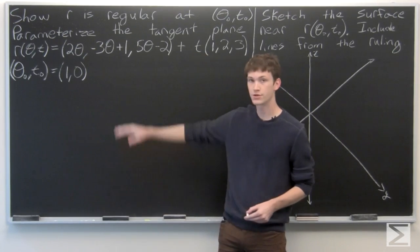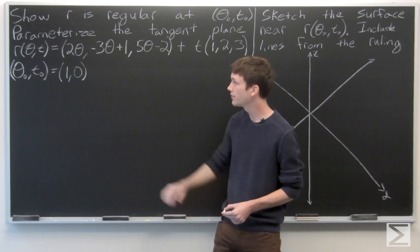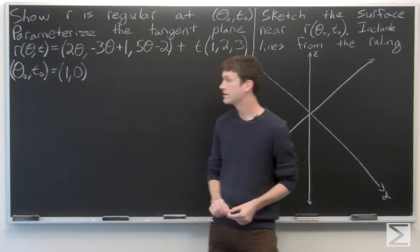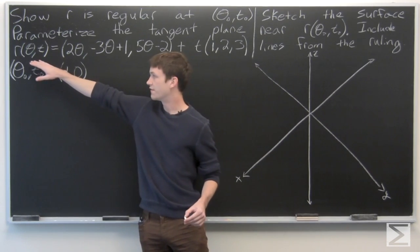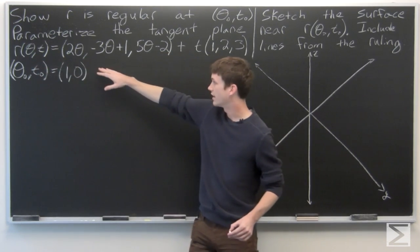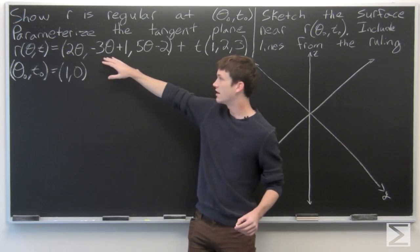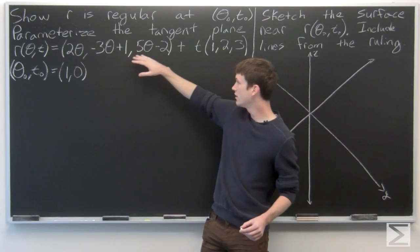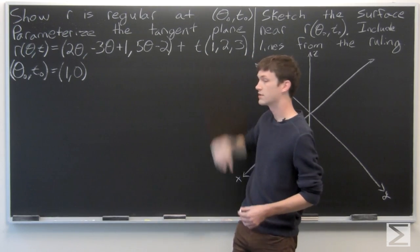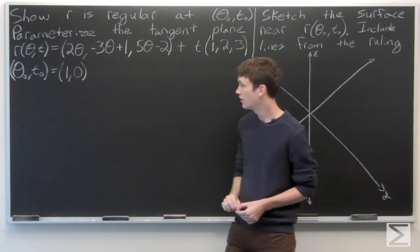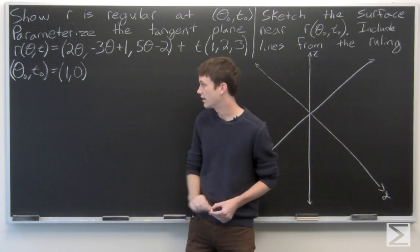In this problem we're asked to show that r is regular at the point θ₀, t₀ and parameterize the tangent plane. We're given that r(θ, t) is the parameterized surface (2θ, -3θ+1, 5θ-2) plus t times (1, 2, 3), and we're given that (θ₀, t₀) is at (1, 0).